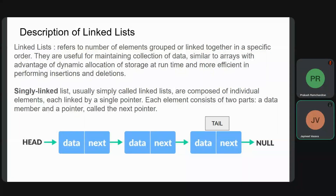Looking at the diagram of the list, the first element is called the head and the last element is called the tail. Each element has two parts. The last element's next pointer will be pointing towards null, meaning it is the end of the list.